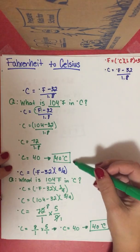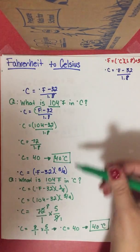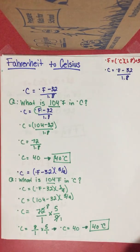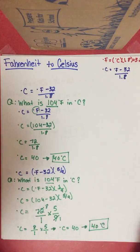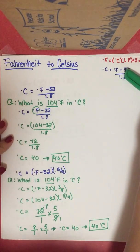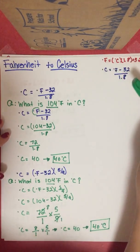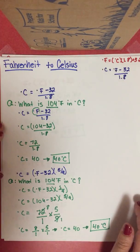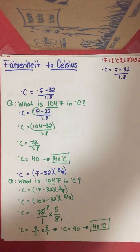Both methods give the same answer — you can use the decimal or the fraction. If you're ever confused, just memorize one formula and solve for the unknown variable by rearranging the equation, like we did at the start of the video. Hopefully this helps — thanks!